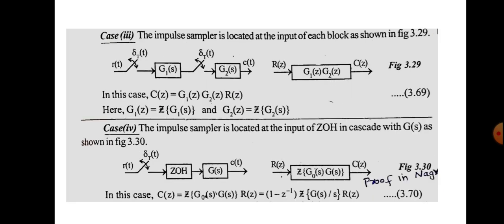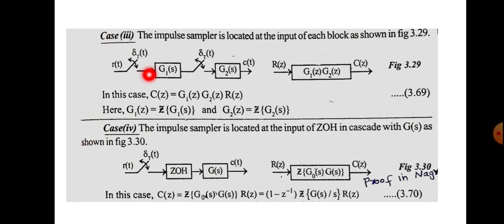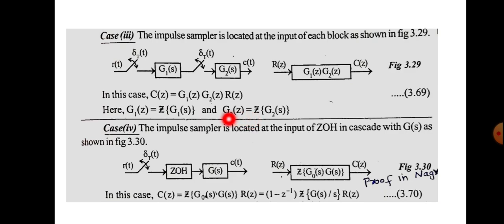Case three: the impulse sampler is located at the input of each block individually. Before G1(s) there is one sampler, and before G2(s) there is another sampler. This gives Z{G1(s)} = G1(z) and Z{G2(s)} = G2(z) independently. So C(z) = R(z) · G1(z) · G2(z), where G1(z) = Z{G1(s)} and G2(z) = Z{G2(s)}.